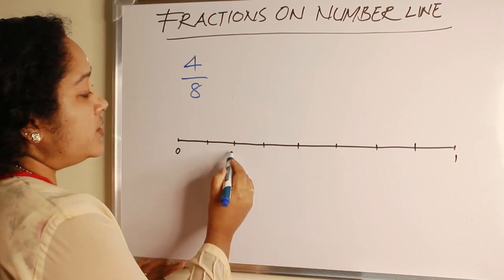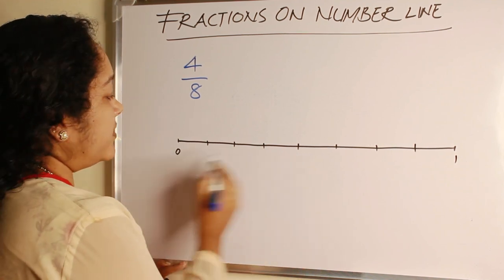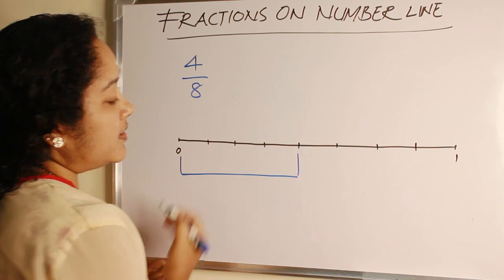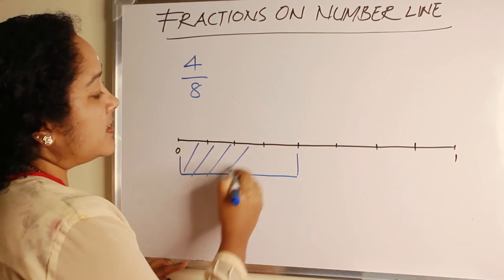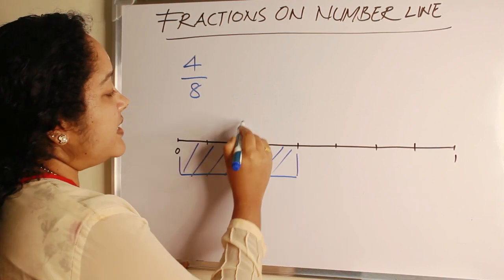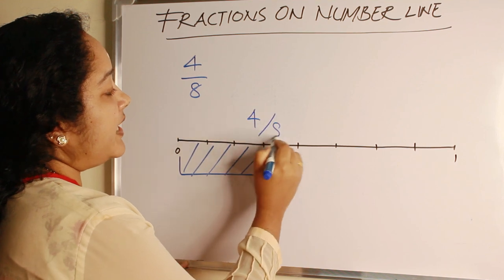So 1 unit is divided into 8 equal parts. The numerator is 4. So we count 1, 2, 3, 4. The shaded part is 4 by 8.